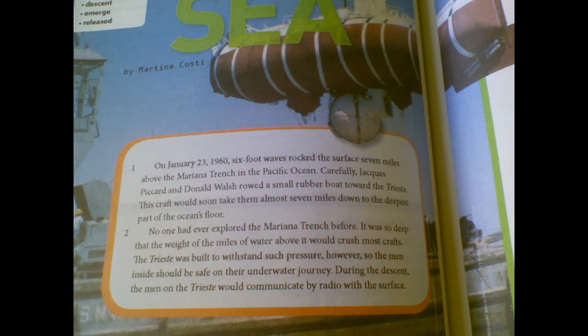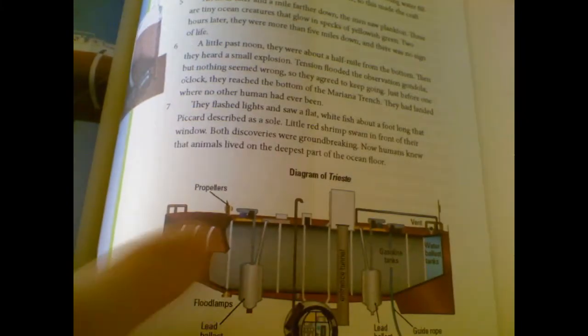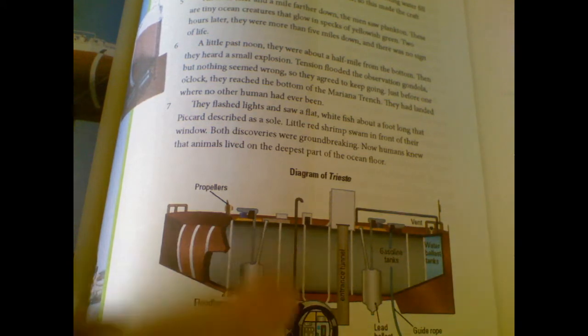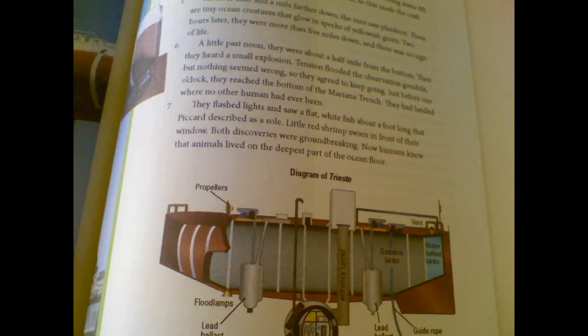So if you read your passage, you found a lot of facts about that voyage. And if you go back, if you look on the next page on 363, your diagram that goes with this passage is of the vessel that they went down below in. The diagram of the Trieste.